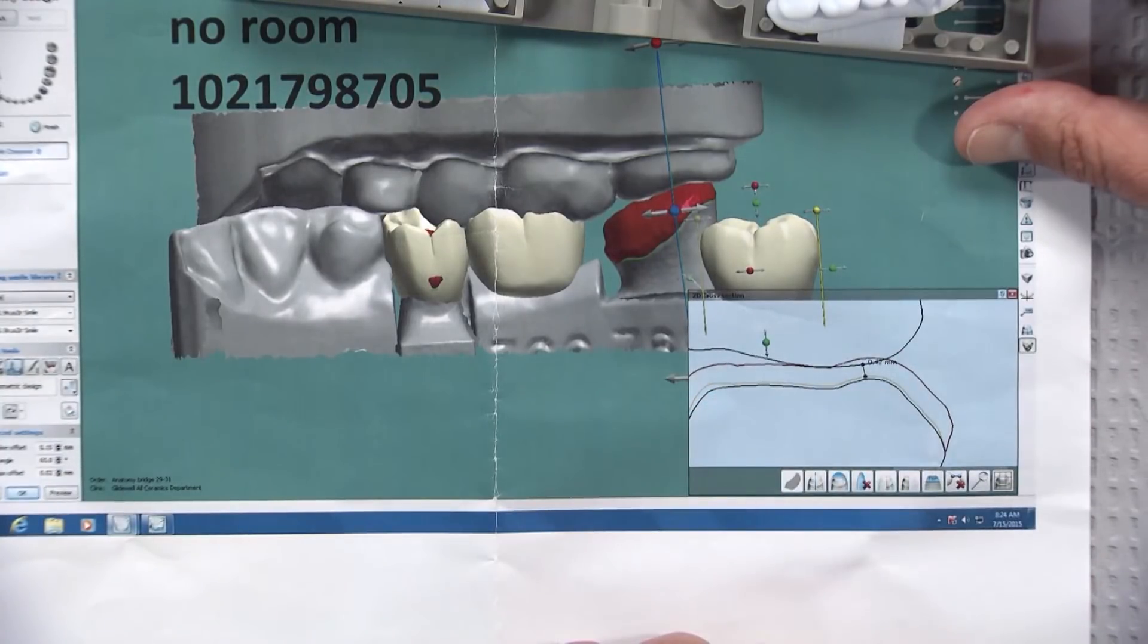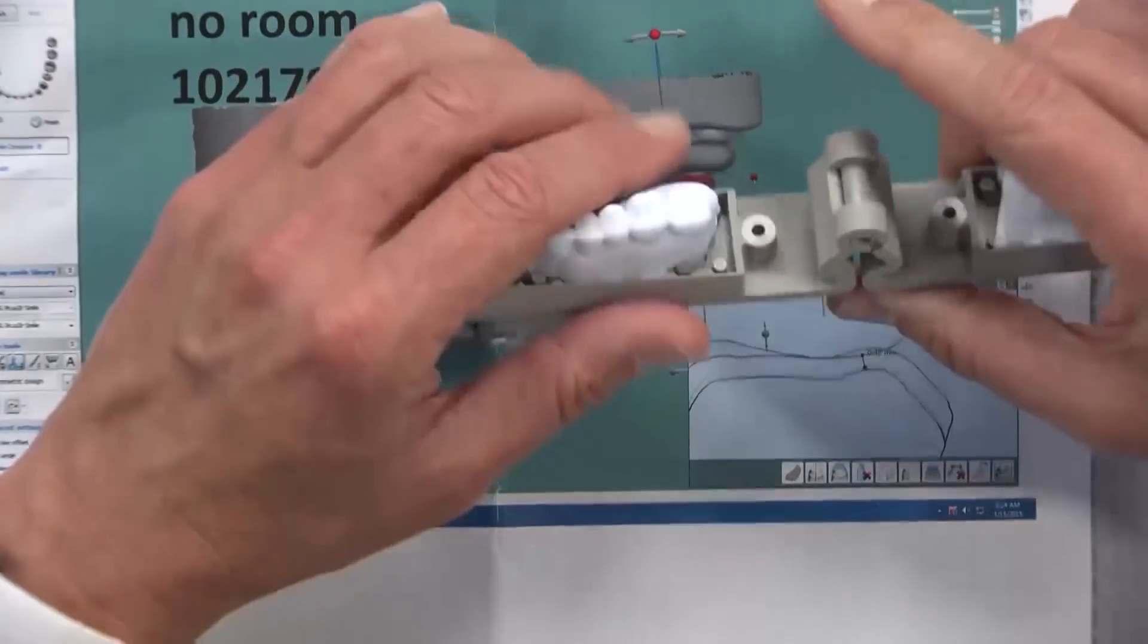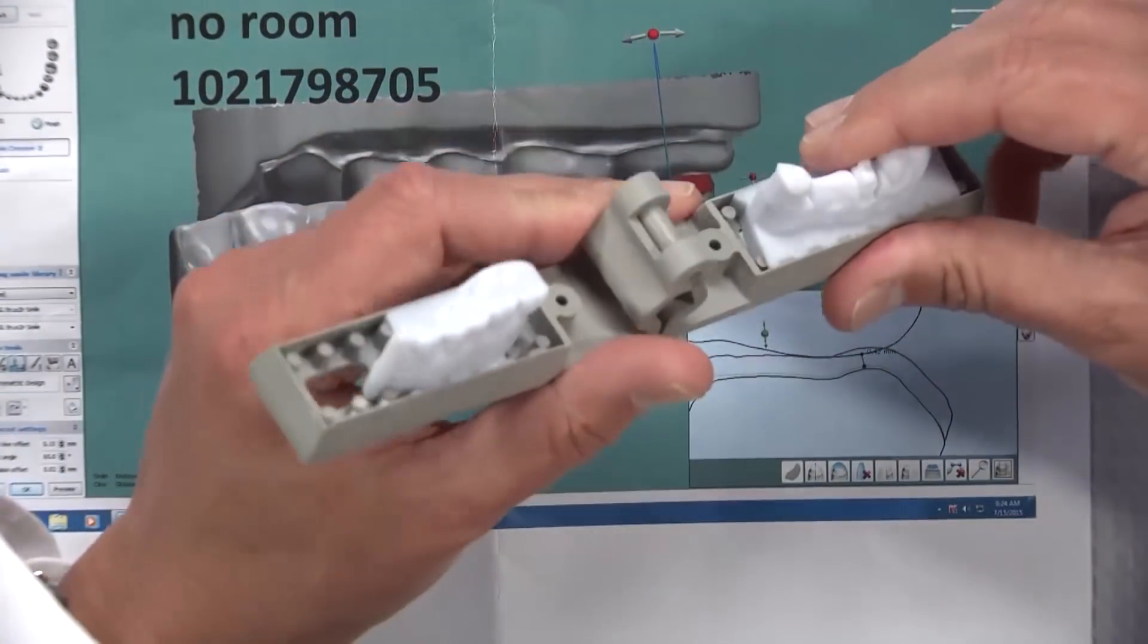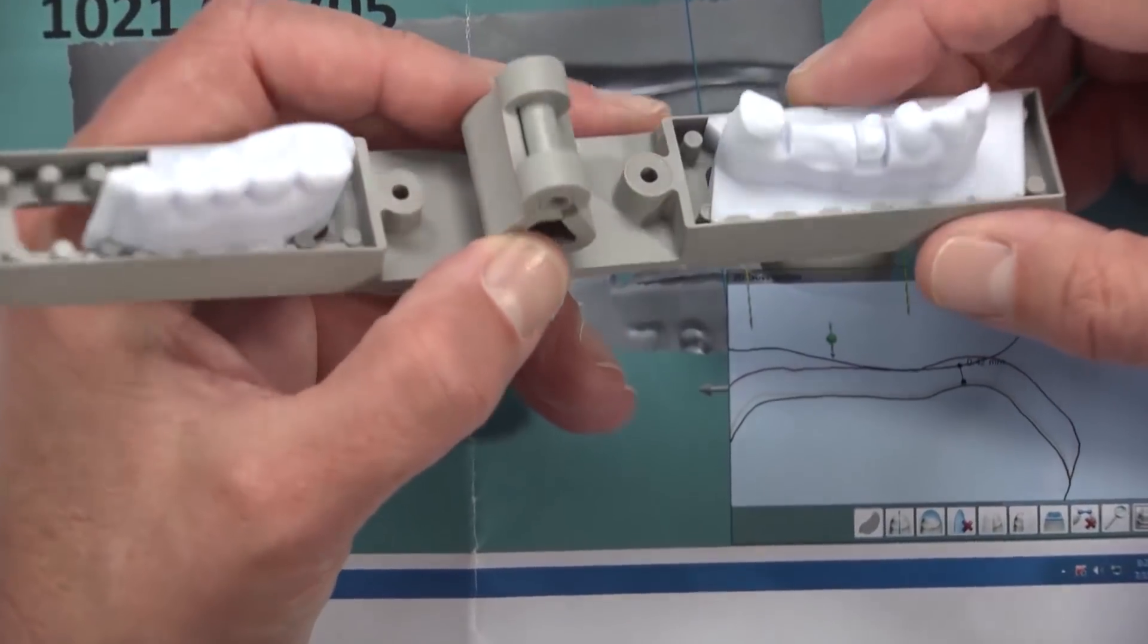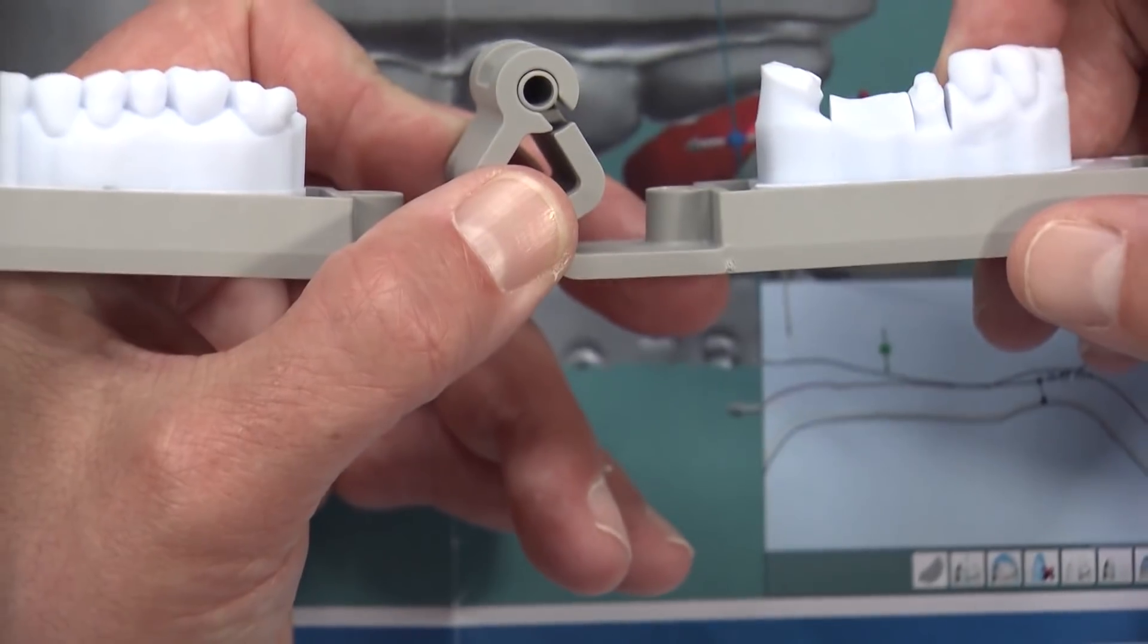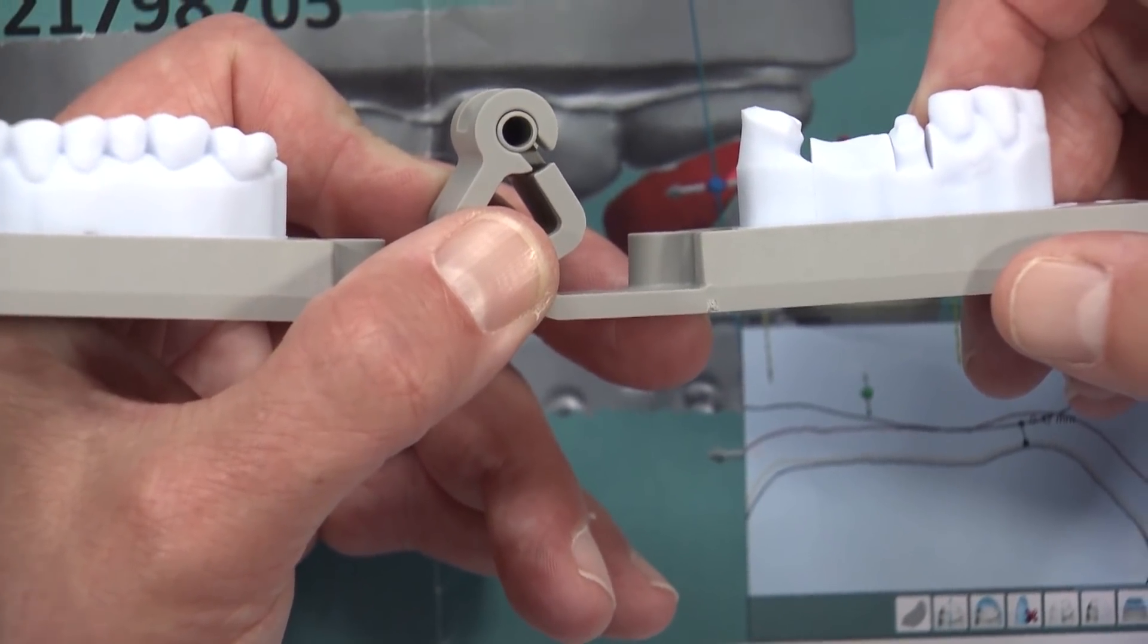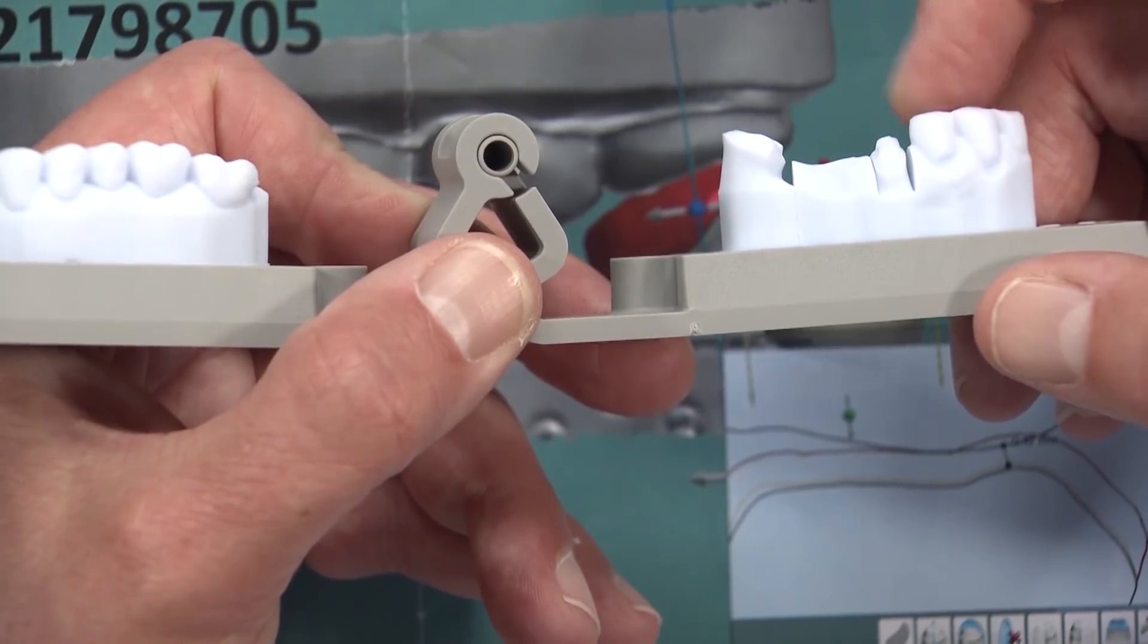At this point we don't have enough room to actually do a Bruxer bridge. If we look at the model and zoom in on this a little bit, you're going to see some issues. We have a very short distal wall. If you look at the distal, this is always very difficult to do because you can see how tapered it is.